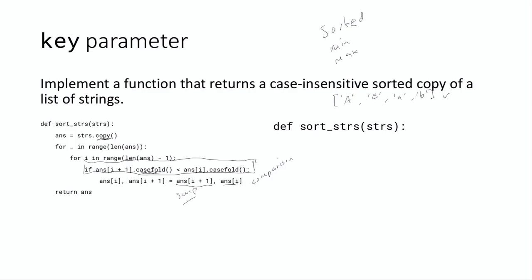So the idea is: we want to compare in a case-insensitive way, but we want to maintain the original values. Since we're trying to do something that involves sorting, we're probably going to want to use the built-in sorted function. But by default, the sorted function will act in the standard way where it puts an uppercase B before a lowercase a. What we can actually do is change how the comparison is done by the sorted function by specifying a special parameter, which is the key parameter — and therefore the name of this video.